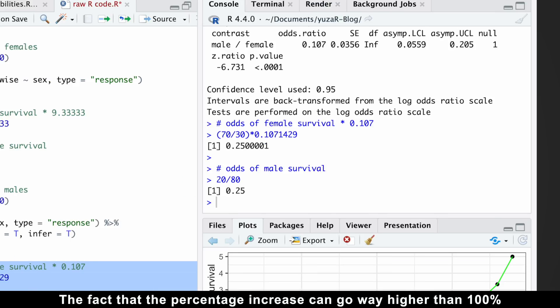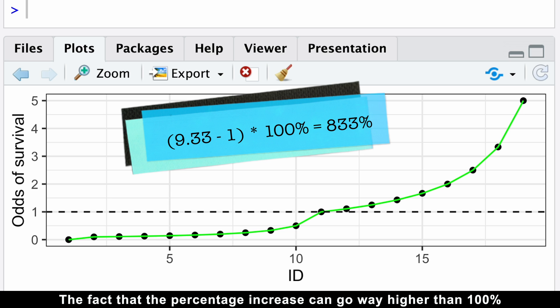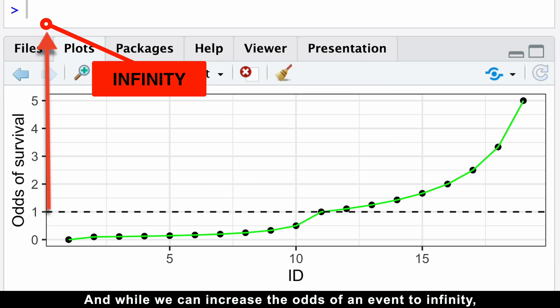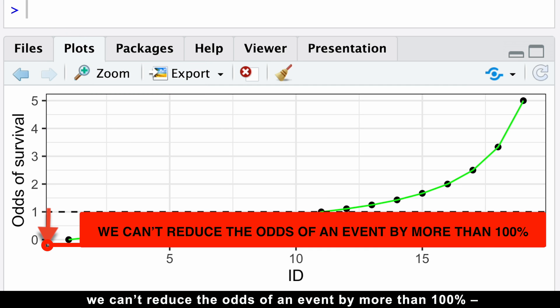The fact that the percentage increase can go way higher than 100%, but cannot go below 100%, again highlights the non-linear nature of odds. And while we can increase the odds of an event to infinity, we can't reduce the odds of an event by more than 100%.